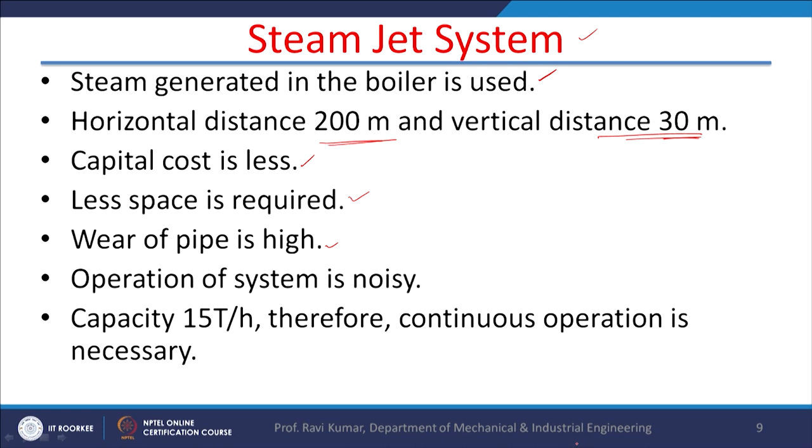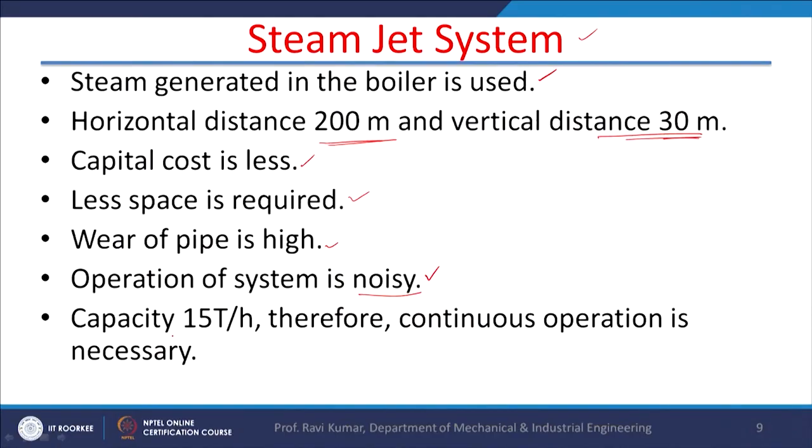The operation of the steam jet system is noisy. Wherever high velocity gases are dealt with, noise is a big issue. This is true not only in power plants but in any plant — if air velocity is high, noise becomes a major limiting factor for any pipe or duct. The capacity of the steam jet system is 15 tons per hour and it has to be continuously in operation.